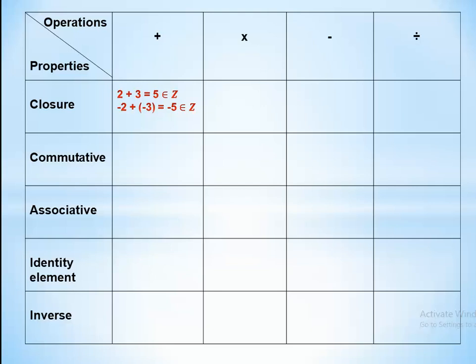If we check closure on multiplication: 2 by 3 equals 6, and 6 belongs to Z; negative 2 by 3 equals negative 6, and negative 6 also belongs to Z. So closure is exact on multiplication, because any result of multiplication belongs to Z.